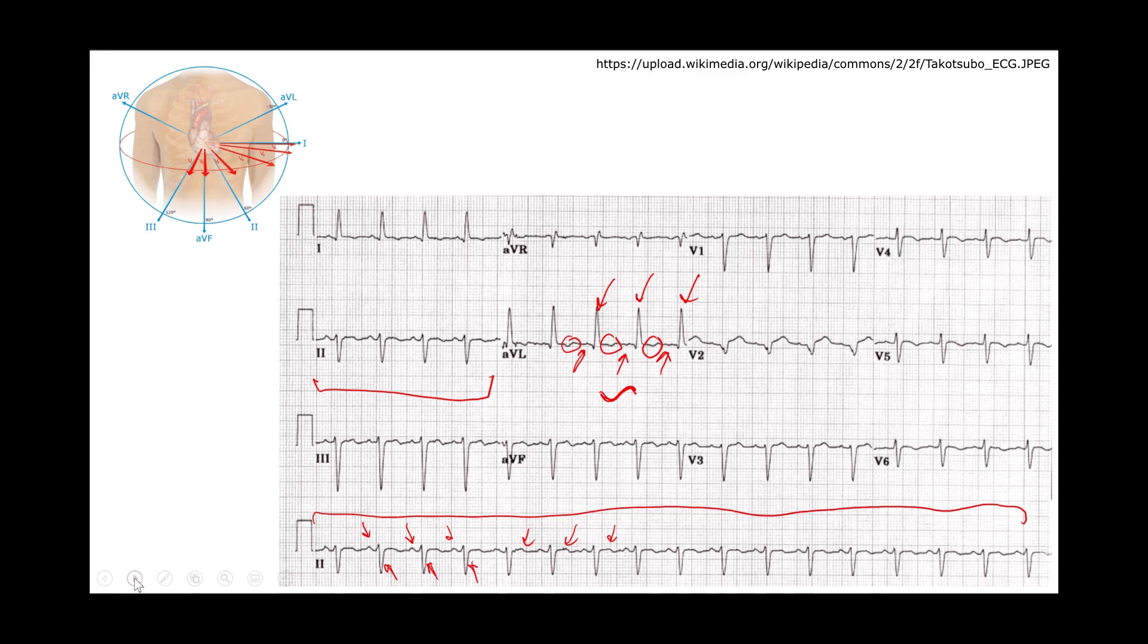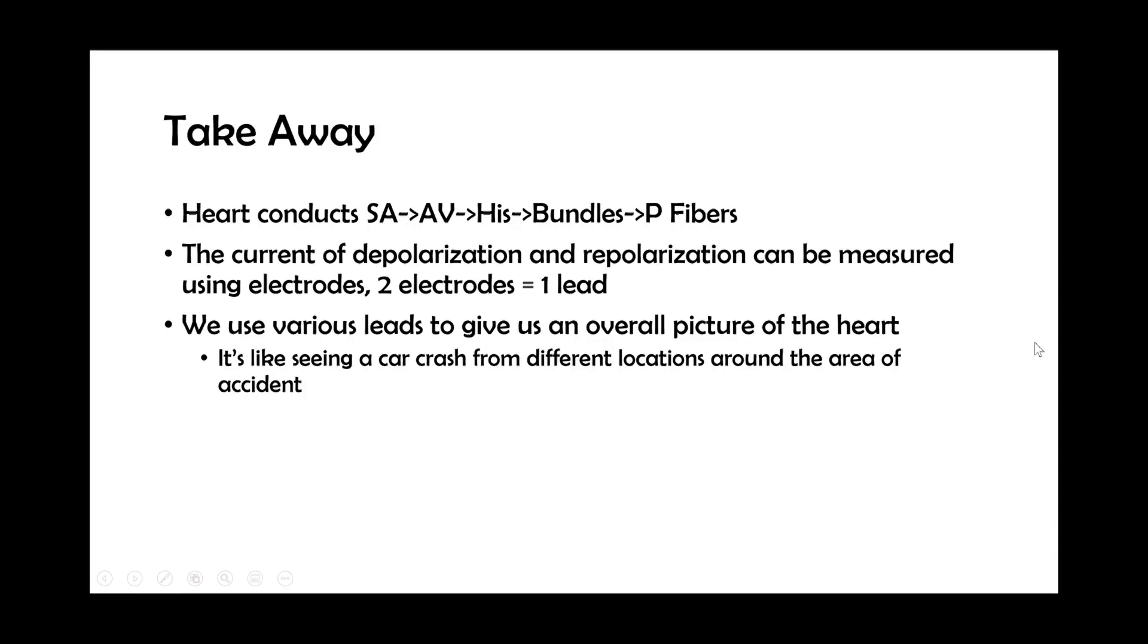Okay, so that was our first EKG. So some takeaway points. The heart conducts all the way from the SA node, the sinoatrial node, down to the Purkinje fibers. The current of depolarization and repolarization can be measured using electrodes. Remember that two electrodes make one lead. But we have, usually we have 12 different leads showing us the heart. And because we have various leads, we're looking at the heart from different angles and perspectives and getting a really full overall picture of what's going on in the heart, as far as electrical activity goes. All right, that concludes video one. Hope you guys stick around for video two on determining rate. Have a nice day.